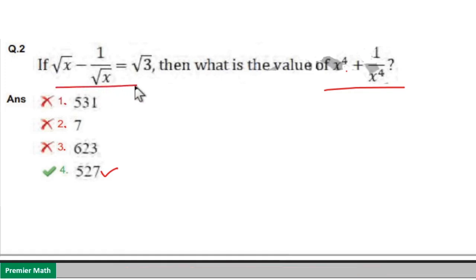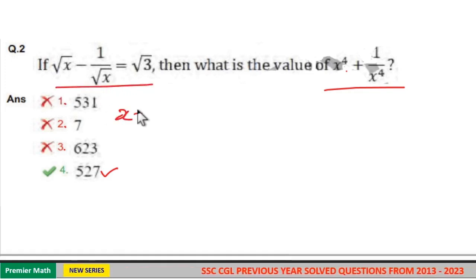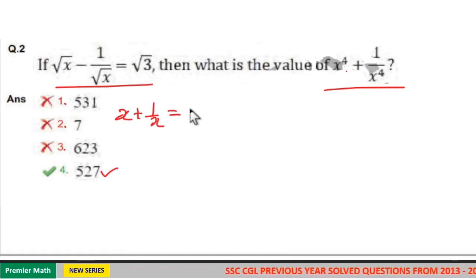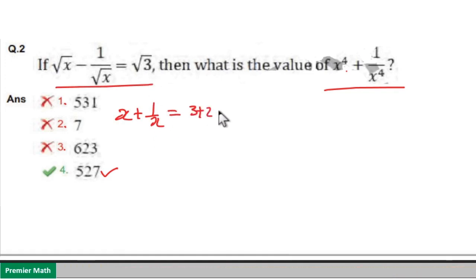That is, here if you square this term, this will become x plus 1 by x minus 2 is equal to 3. So x plus 1 by x will become 3 plus 2, which is 5.